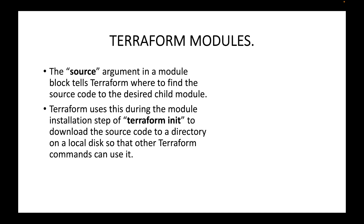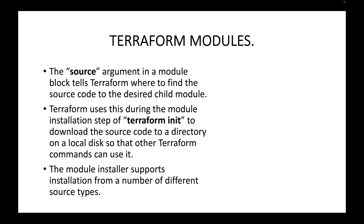Terraform uses the source argument during the module installation step of the terraform init command. Whenever we run terraform init, Terraform will download the source code to a directory on your local machine so that other Terraform commands can use it. Whenever we use a module block with a source and initialize the configuration, Terraform downloads the source code and stores it on your local disk. This module supports a variety of source types.